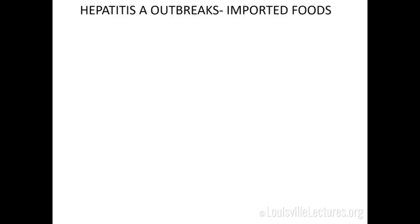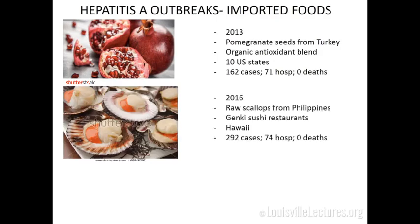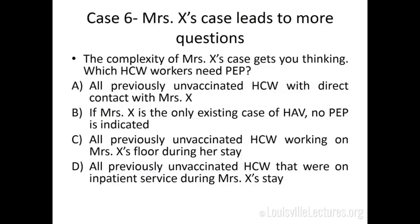Recent imported food outbreaks in the U.S.: In 2013, imported pomegranate seeds from Turkey in an antioxidant blend affected 10 states with 162 cases, about half hospitalized, no deaths. Raw scallops from the Philippines at Hawaiian sushi restaurants caused nearly 300 cases, 74 hospitalizations, no deaths. Frozen strawberries imported from Egypt in 2016 spread across nine states with 143 cases and about half hospitalized. All those products are now safe.